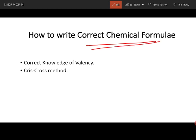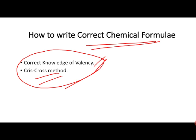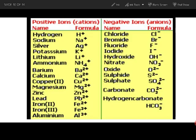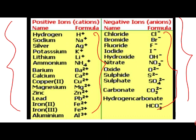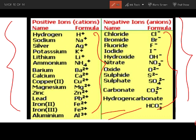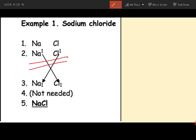The last part of this chapter is how to write a chemical formula. Two important factors are: correct knowledge of valency (which we've discussed) and the crisscross method. I have given a table of important valencies of positive and negative ions — please take a screenshot, as you must remember these to write chemical formulas.